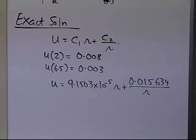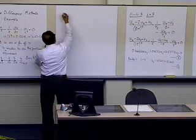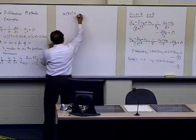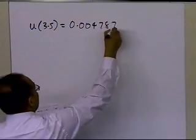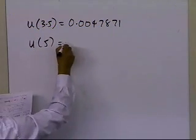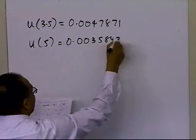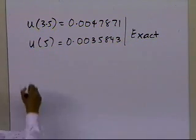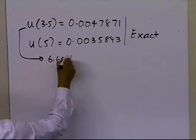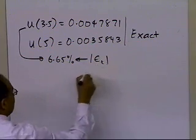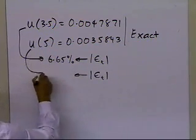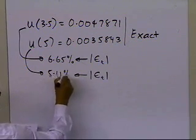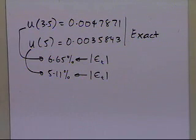Using the exact solution, u at r=3.5 is 0.0047871 and u at r=5 is 0.0035843. Comparing with the numerical results, the absolute relative true error at r=3.5 is 6.65 percent, and the relative true error at r=5 is 5.11 percent.